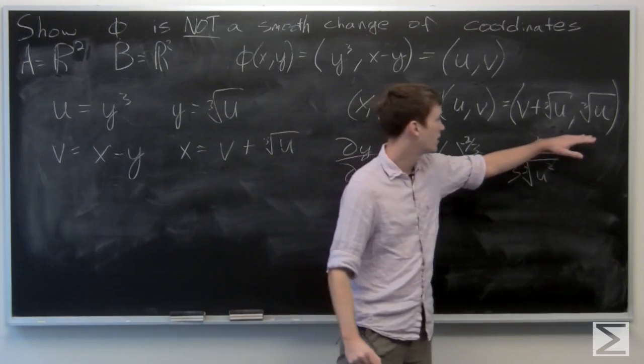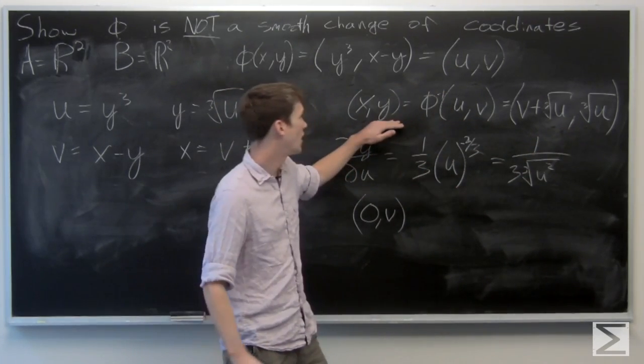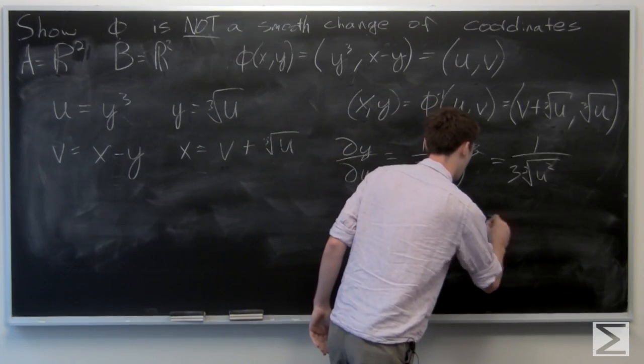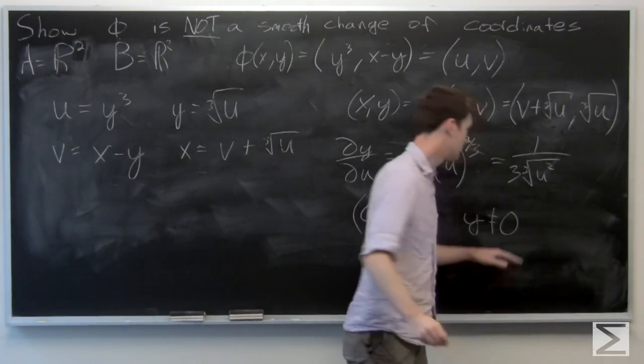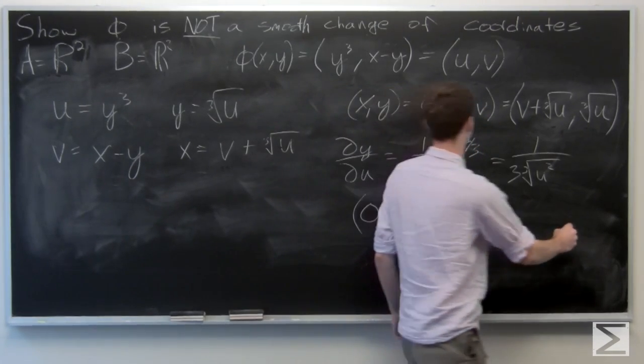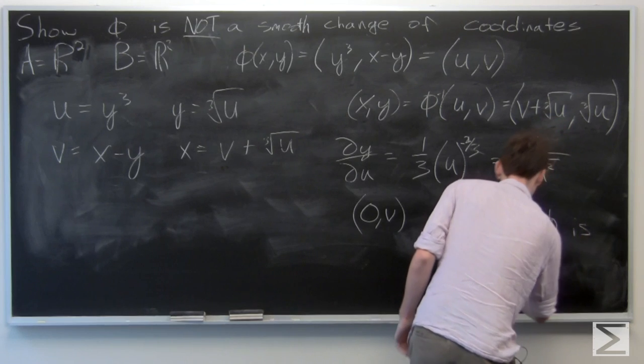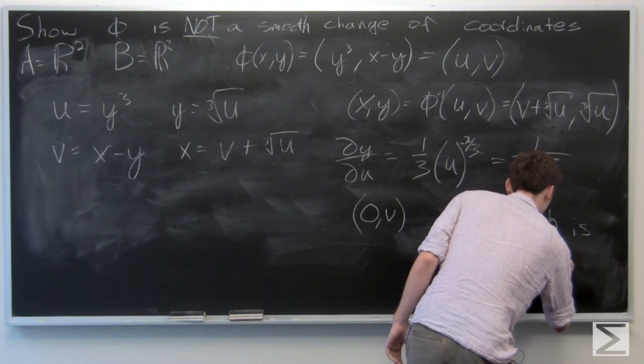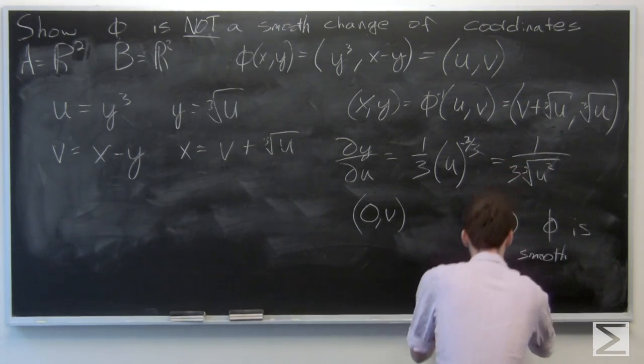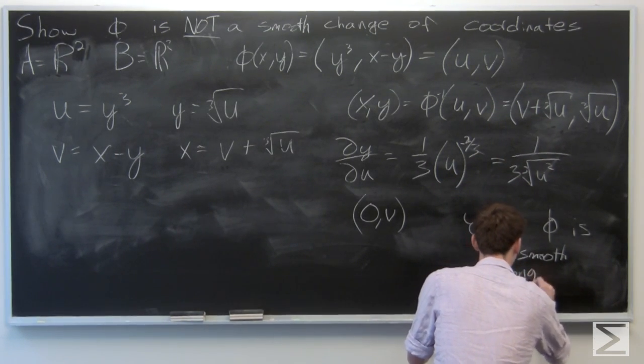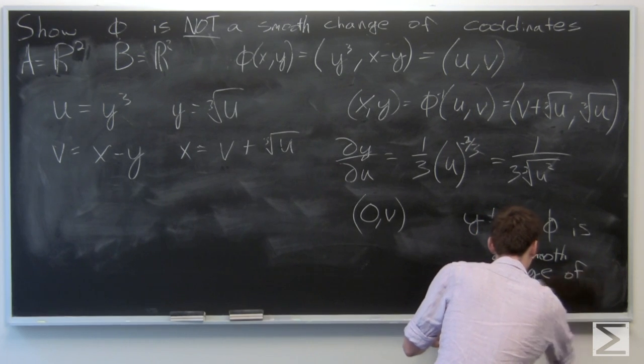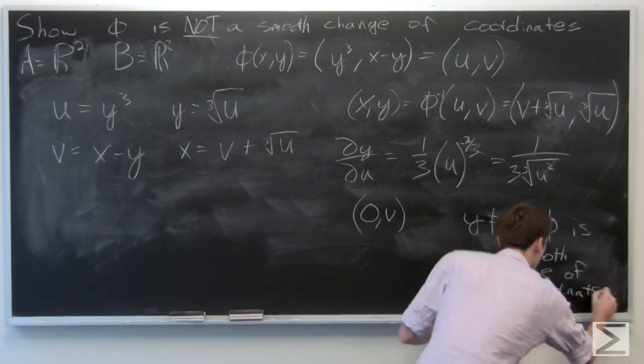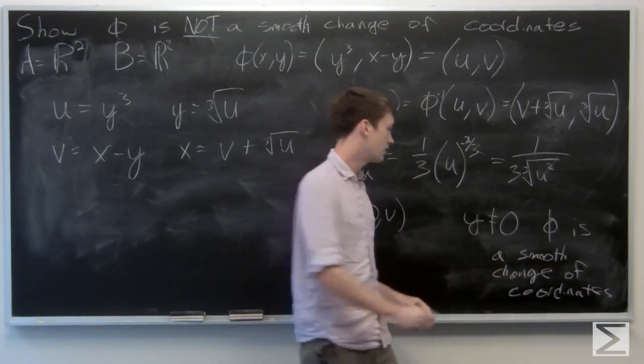If u is 0, then we see that our y component is 0. So for all points y not equal to 0, phi is locally smooth.